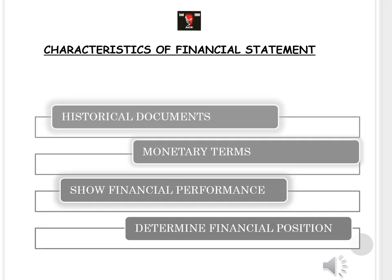Let us now look at the characteristics of financial statements. First, they are historical documents. Financial statements are based on historical records — assets and liabilities reflected may have been generated five, six, or even ten years ago. The value reflected will be the same as when originally recorded, because unless an asset is sold off or a liability is written off, the value is mentioned at its original historical cost — the value at the time of purchase or when the liability was taken up.